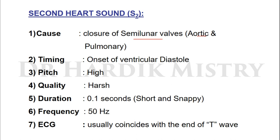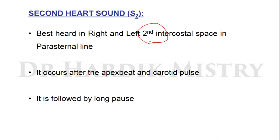The second heart sound HS2 is caused by closure of the semilunar valves — the aortic and pulmonary semilunar valves. Timing is at the onset of ventricular diastole; pitch is high; duration is 0.1 seconds; it is a short and snappy sound; frequency is 50 Hz. On ECG it usually coincides with the end of the T wave. It is best heard in the right and left second intercostal space in the parasternal line. It occurs after the apex beat and carotid pulse, and it is followed by a long pause.